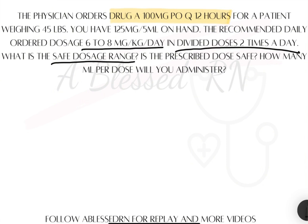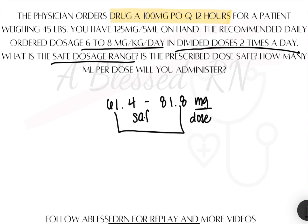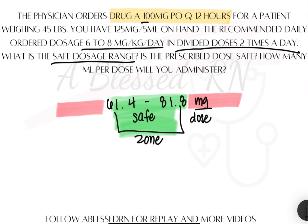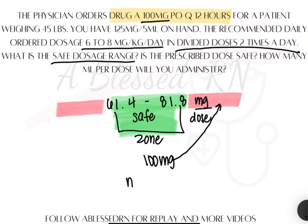Our safe dose range has been determined: the lower limit is 61.4 and the upper limit is 81.8 milligrams per dose. This is the safe zone — the green zone. Anything that falls between or at those two numbers is safe. Anything below or above those numbers is the red zone — not safe. Now we take what's ordered, which is 100 milligrams, and check whether it falls in the green or red zone. Clearly, 100 milligrams exceeds the upper limit, so it is not safe.